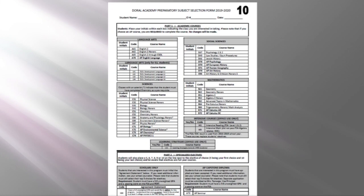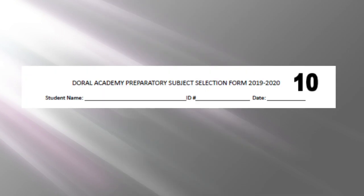Now we are ready to begin. Turn to your subject selection sheet and start by clearly printing your first name, your last name, your ID number, and today's date. Please do this in your best handwriting so that your counselor is able to read your information.